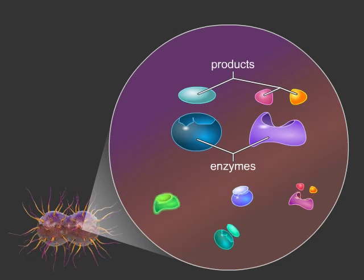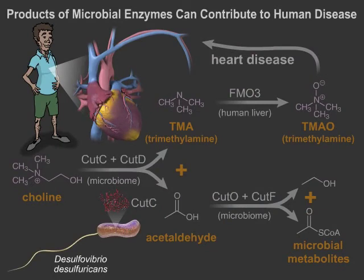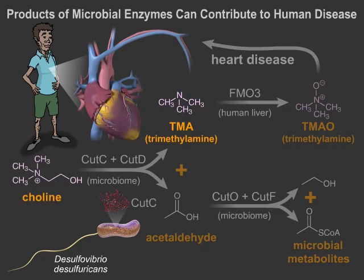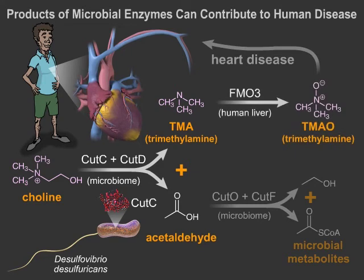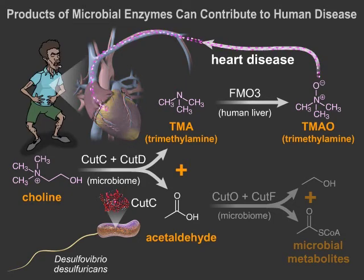Some of these products can be toxic to humans. One example, which we first found in the gut microbe Desulfovibrio desulfuricans, is trimethylamine, which is generated from the essential nutrient choline by the microbial enzyme choline trimethylamine lyase, or CutC for short. Trimethylamine then enters the bloodstream and is converted into trimethylamine oxide by the liver. High levels of trimethylamine oxide have been shown to increase risk for heart disease. If we could inhibit CutC, we might be able to slow this disease progression.